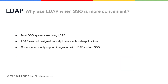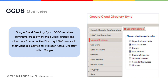The question you might be asking is: why should you use LDAP when SSO is so much more convenient? Most SSO systems are actually using LDAP. However, LDAP was not designed natively to work with web applications, and some systems only support integration with LDAP and not SSO. Google Cloud Directory Sync, or GCDS, enables administrators to synchronize users, groups, and other data from an Active Directory or LDAP service to their managed service for Microsoft Active Directory within Google.